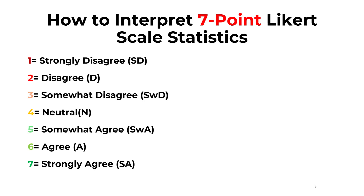The coding goes from one corresponding to strongly disagree, two disagree, three somewhat disagree, four neutral, five somewhat agree, six agree, and finally seven strongly agree — or any other content such as likelihood and frequency, among others.